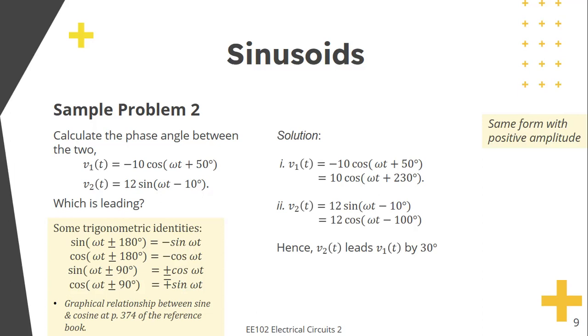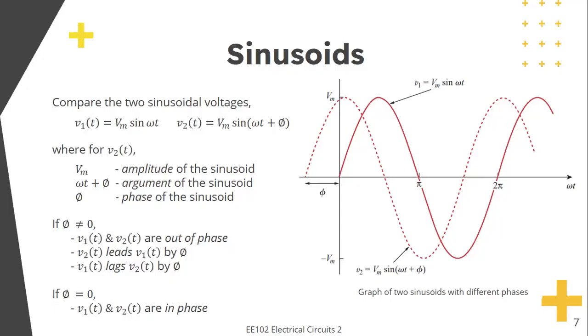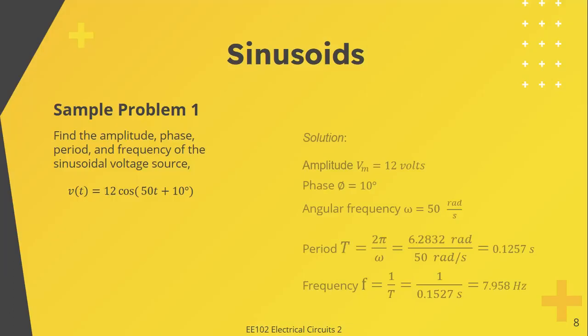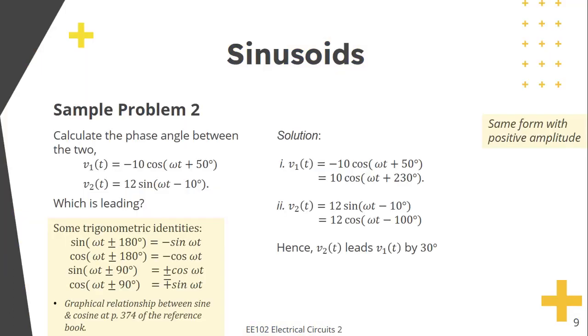Now, as mentioned earlier, when comparing sinusoids, they must have the same form—both either sine or both cosine with positive amplitude—so that we can compare them easily. We must first express them in the same form using trigonometric identities.